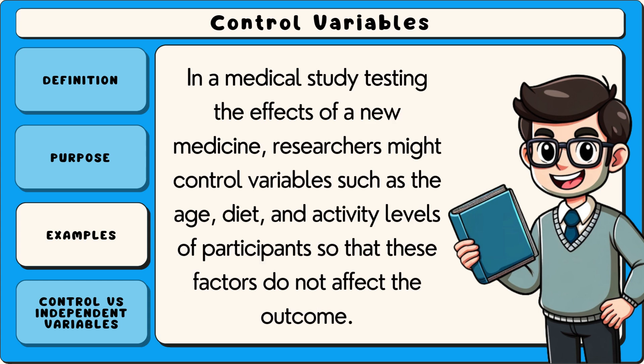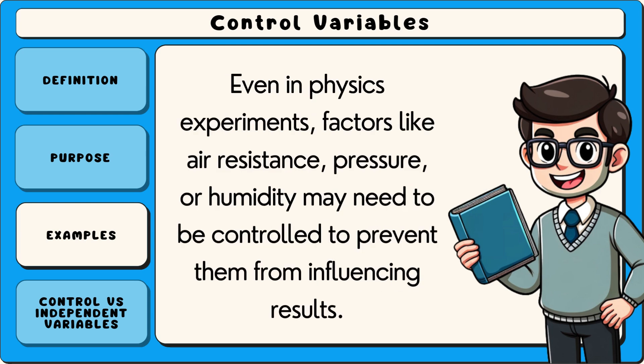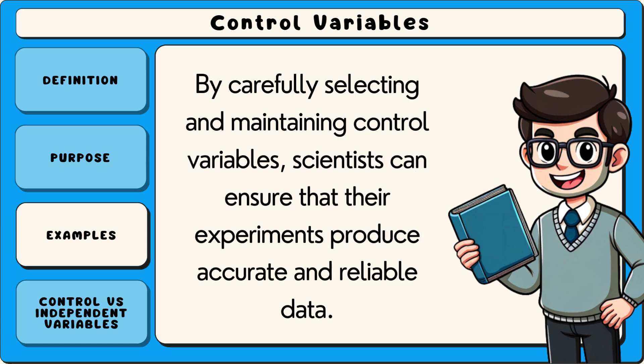In a medical study testing the effects of a new medicine, researchers might control variables such as the age, diet, and activity levels of participants so that these factors do not affect the outcome. Even in physics experiments, factors like air resistance, pressure, or humidity may need to be controlled. By carefully selecting and maintaining control variables, scientists can ensure that their experiments produce accurate and reliable data.